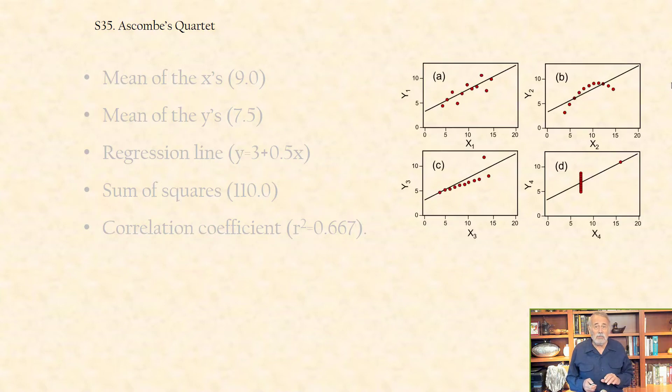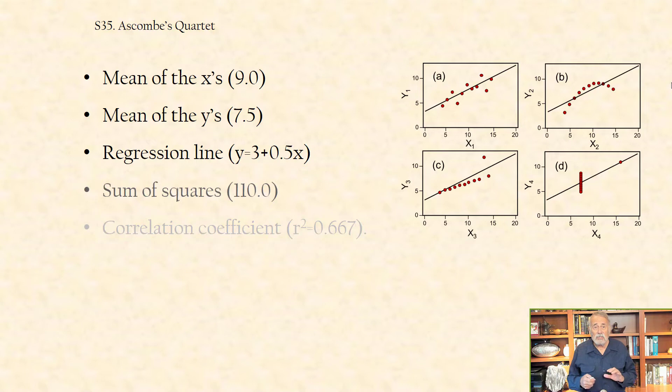Including the mean of the x's, 9.0, the mean of the y's, 7.5, regression line y equals 3 plus 0.5x, sum of squares 110, and the correlation coefficient r-squared equals 0.667.